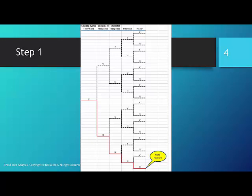Once more, if the correct action is taken, we follow the dashed yes line. If the operator does not take the proper action, then we continue to follow the solid red line.